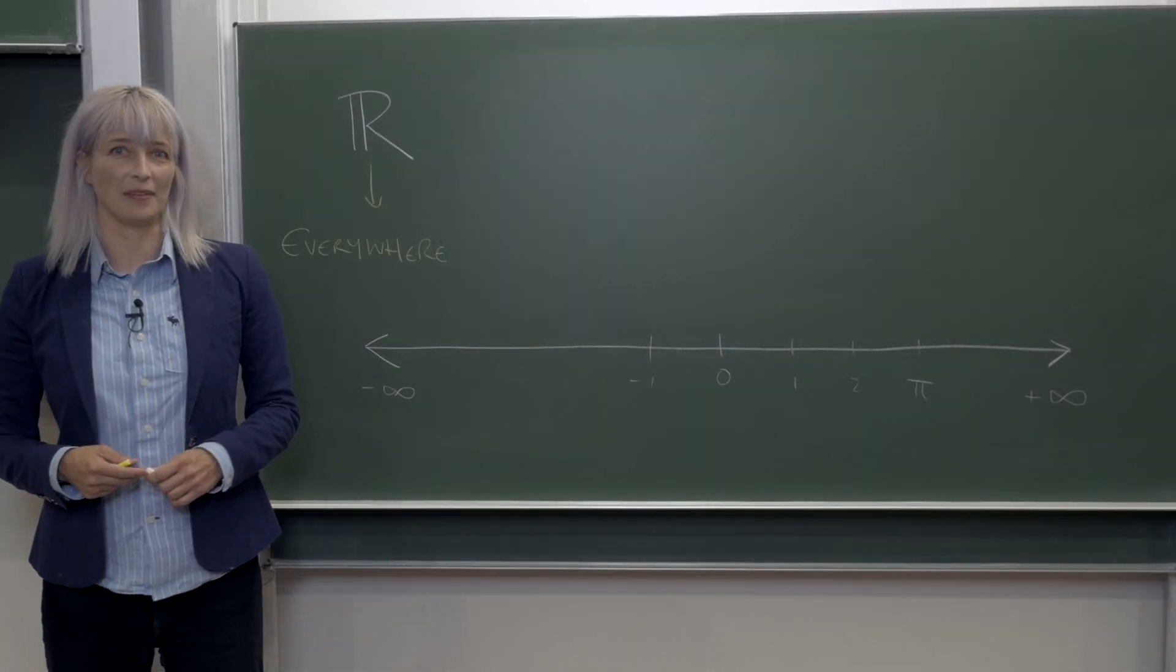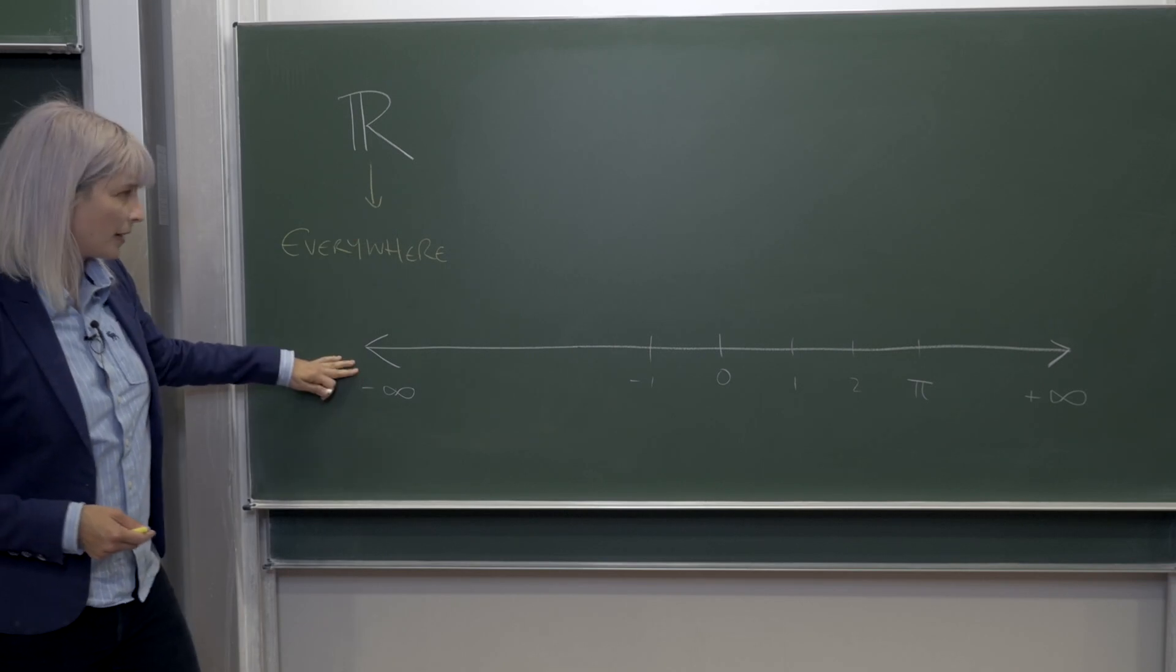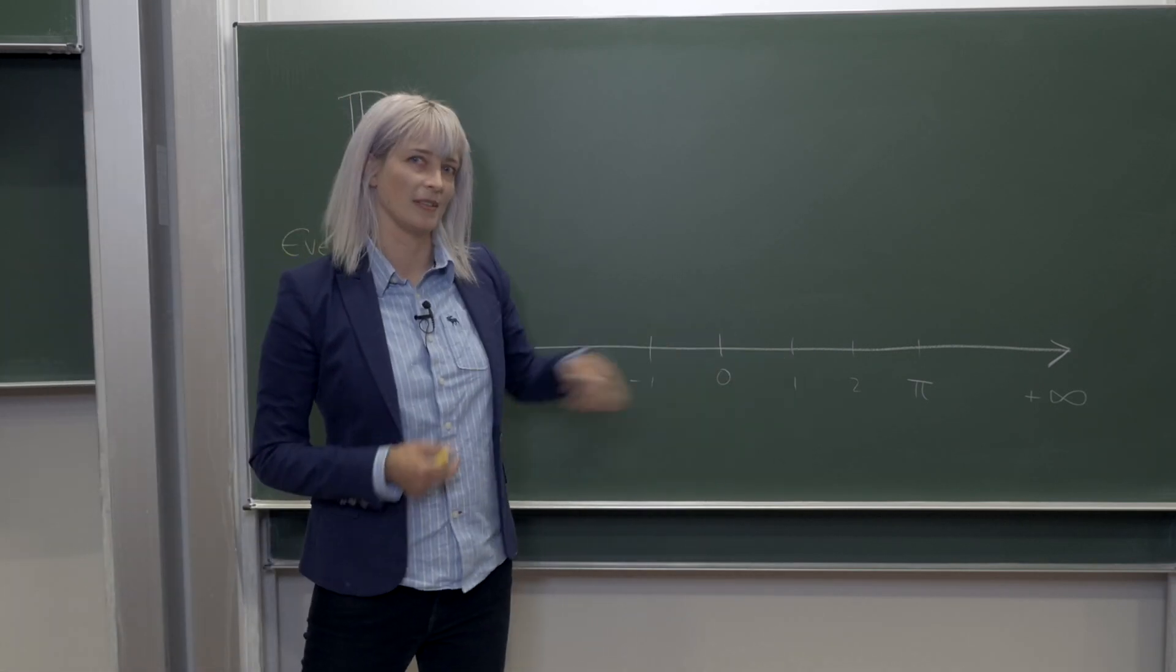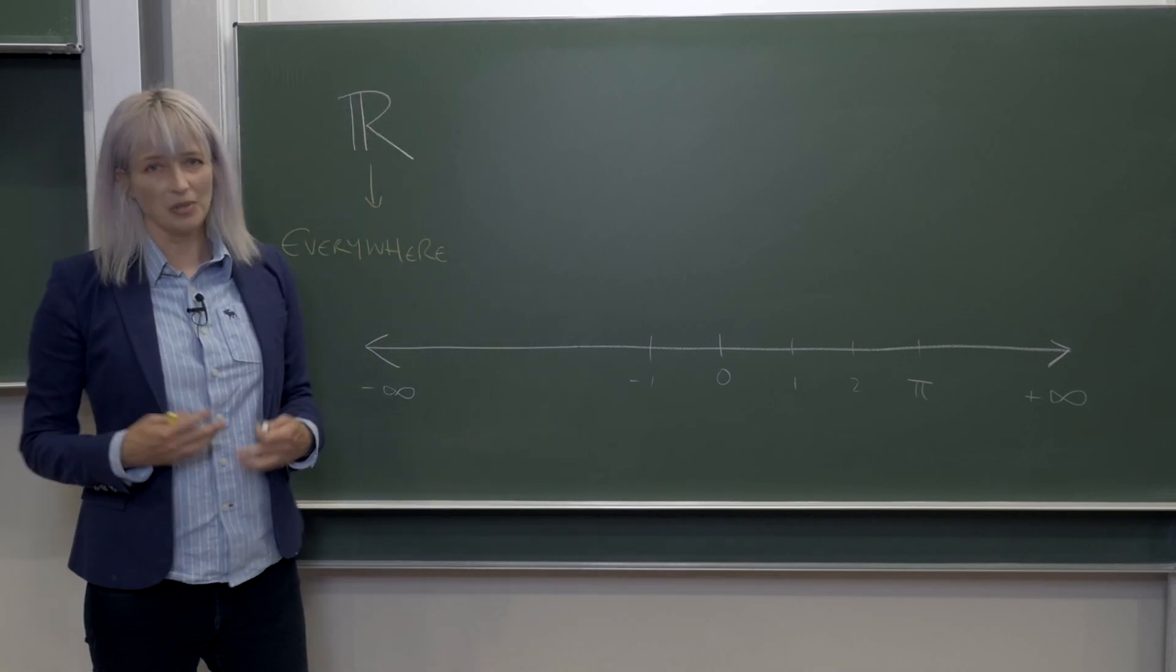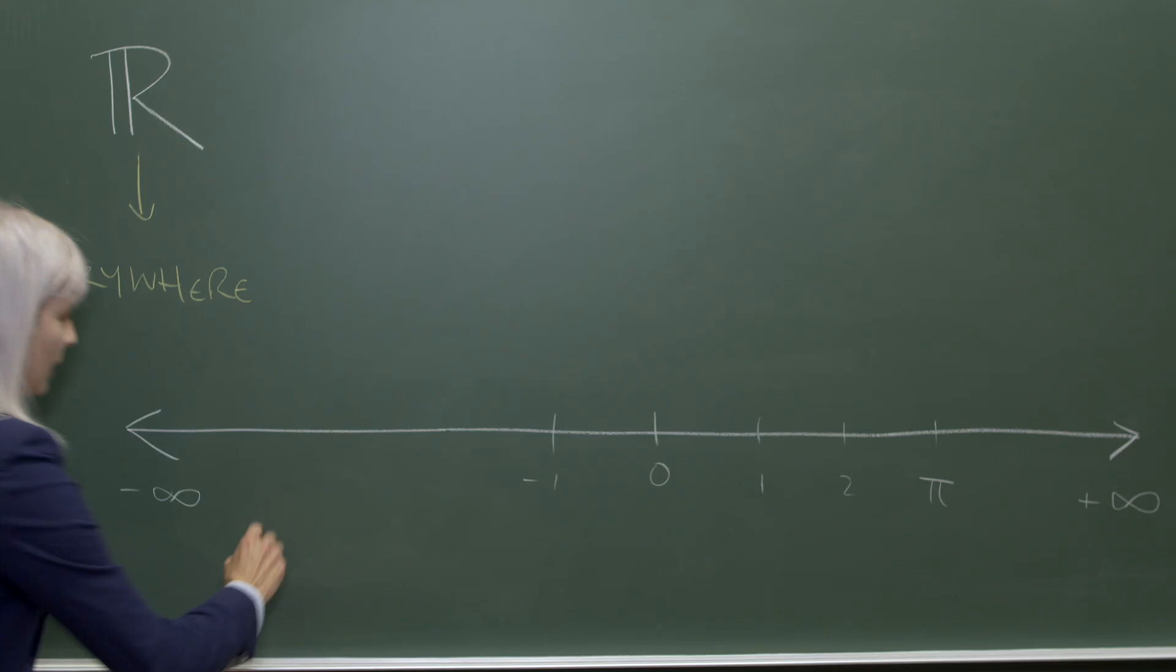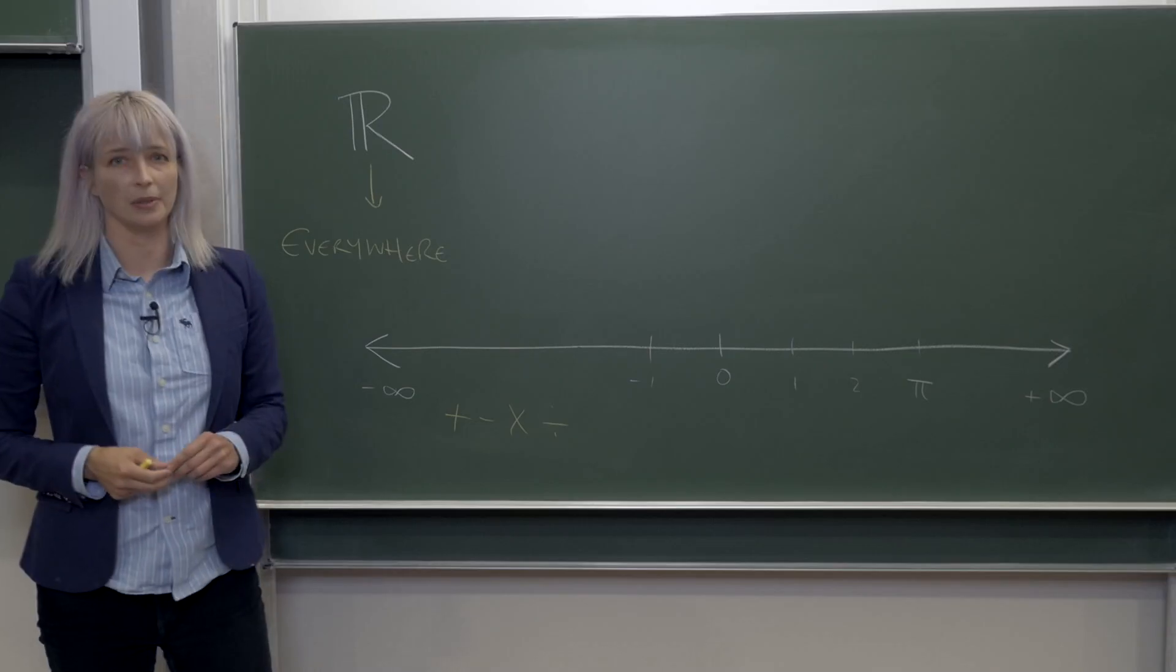Now, the number system that we're used to using in everyday life is called the real numbers. The real numbers span from minus infinity to plus infinity with everything in between. One of the things that makes the real numbers so useful is that we can always add, subtract, multiply, and divide any two real numbers.